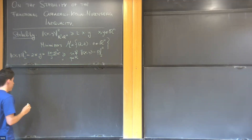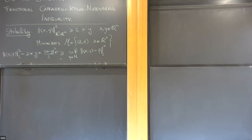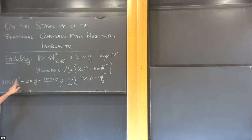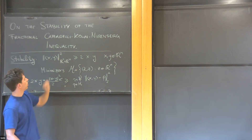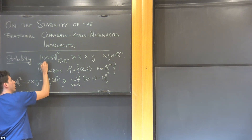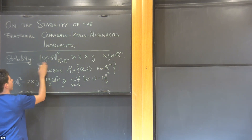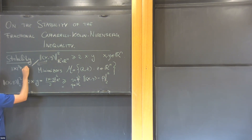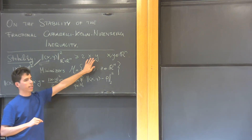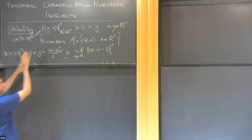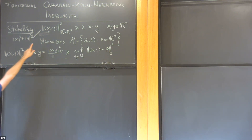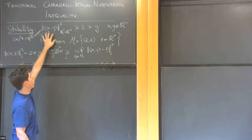The basic inequality is x² + y² ≥ xy — nothing fancy. I've written it in a form that makes clear this is a norm induced by a scalar product, with the same thing appearing on the other side. We'll see that the Sobolev inequality has the same structure.